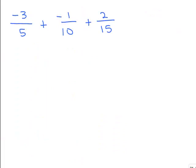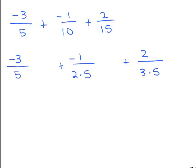Here's our next example — we're adding 3 fractions that all have unlike denominators. We need to find the least common denominator of 5, 10, and 15. This time I'll use prime factoring. 5 is already prime. 10 is 2 times 5. 15 is 3 times 5. The LCD needs a 5, a 2, and a 3: so 5 times 2 times 3 equals 30. The least common denominator is 30.